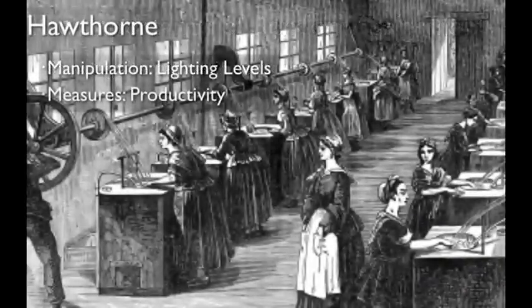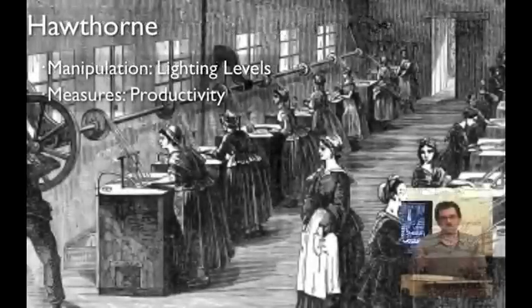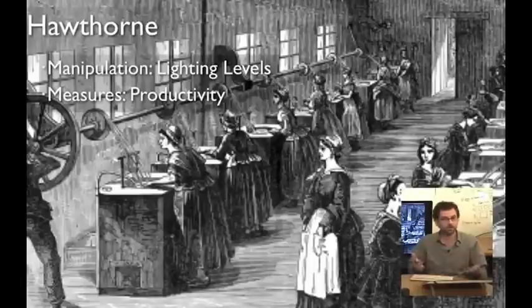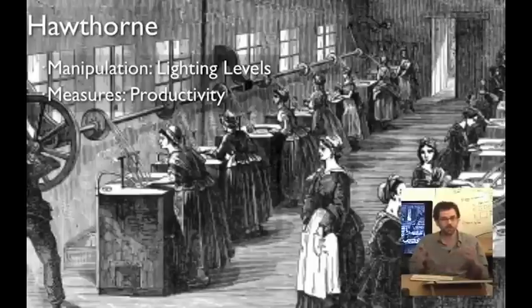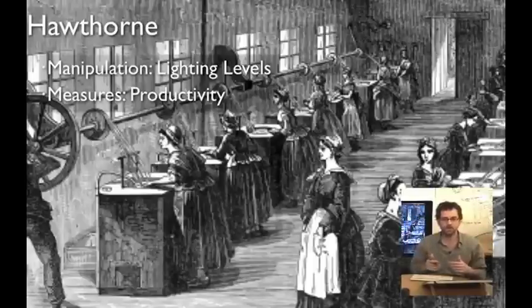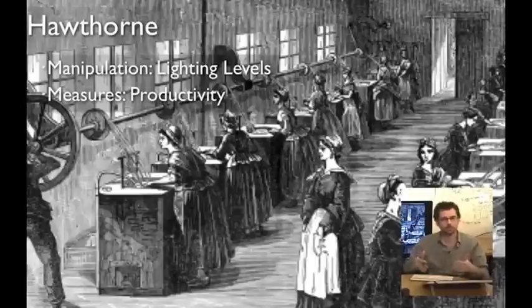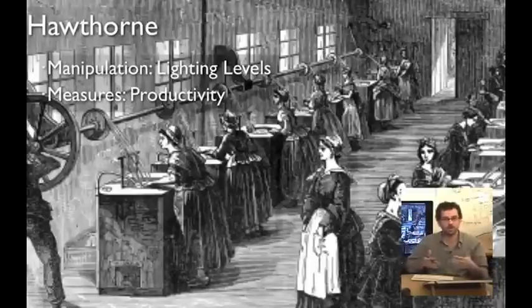Here's another example of the importance of random assignment. In the 1930s, some studies were run at the Western Electric Factory outside Chicago called Hawthorne. And the plan was pretty simple. Find out whether changes in lighting levels affected productivity. So, experimenters came in, raised the lighting levels, productivity goes up. Then, they tried lowering the light levels, productivity went up. They tried a whole bunch of combinations. After each intervention, productivity went up. The conclusion, of course, is that it's the act of intervening rather than the light levels itself, which was the major cause behind a productivity change.